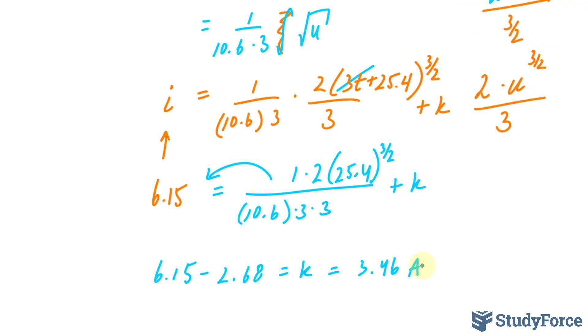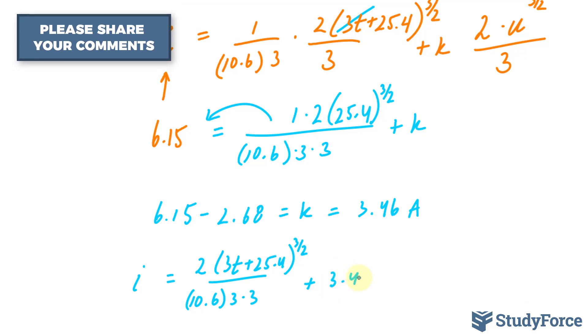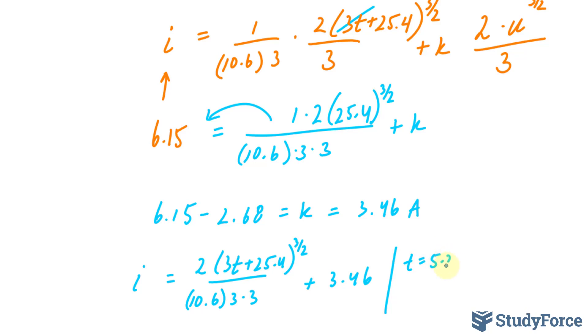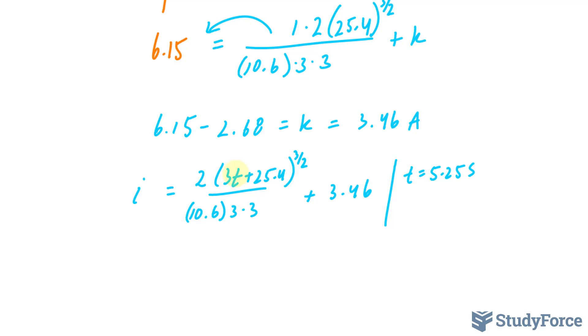Now I finally have my k, I can sub it back into here, and I can find out the current at 5.25 seconds. Here's how. My current is equal to plus 3.46. Now I have to set my t equal to 5.25 seconds. And if I evaluate this on my calculator, if I set this t equal to 5.25, I should end up with a current of 9 amps.